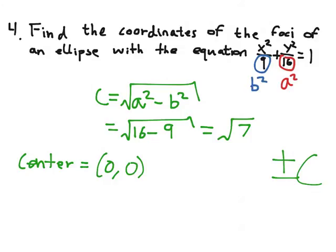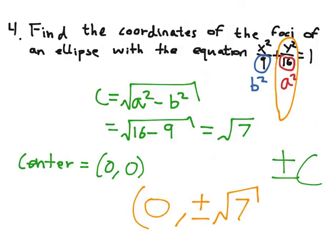The major axis in this case is the Y axis. So, I do the plus or minus C for the Y coordinate. This makes the solution 0 and plus or minus the square root of 7.